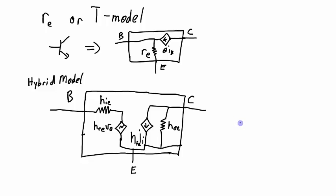Now here's something interesting. The T model is actually a version of the hybrid model when HRE is equal to zero. So that part goes away. HOE approaches infinity. So that's a very big resistance and we can ignore it. And so RE becomes beta times HIE. And here we have a current source and a current source, dependent current sources. Those are the same current sources. So this HFE term actually is the beta term in the T model.